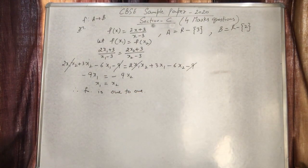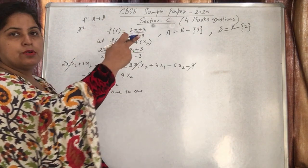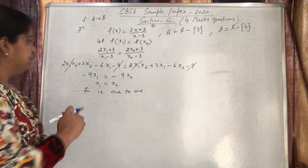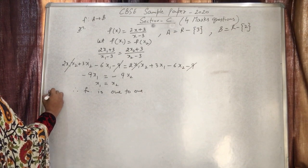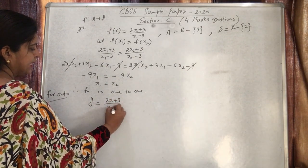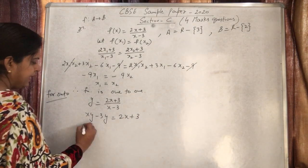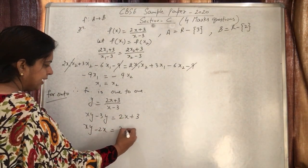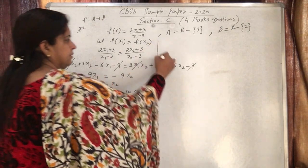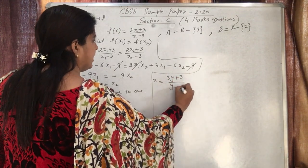The first part is done. For onto, we find x in terms of y. Let f(x) = y, so y = (2x+3)/(x-3). Cross-multiplying and isolating x, we get x = (3y+3)/(y-2). We check if this value belongs to the co-domain ℝ minus {2}: yes, because substituting y = 2 makes x undefined. Therefore co-domain equals range.